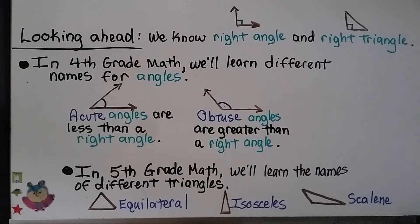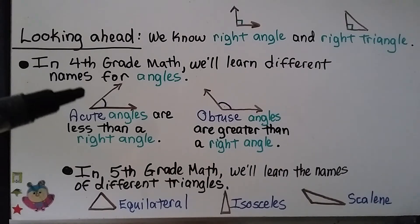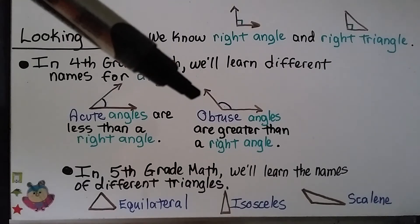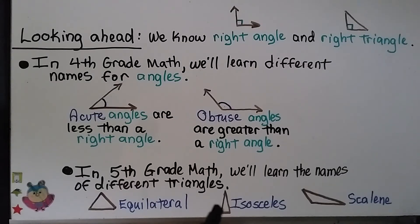Looking ahead: in fourth grade math we'll learn different names for angles. Acute angles are less than a right angle, and obtuse angles are greater than a right angle. In fifth grade math we'll learn the names for different triangles: equilateral triangles have all the same side length and are also equiangular; isosceles triangles have two sides of equal length; and scalene triangles have all three sides of different lengths.